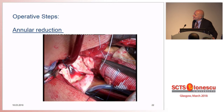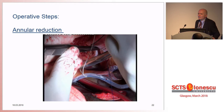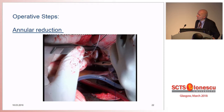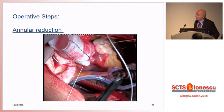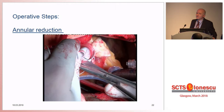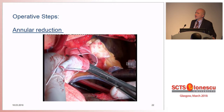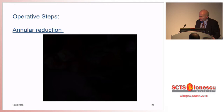This suture annuloplasty is shown here: a CV-0 PTFE suture fixed at the level of the nadirs of the three sinuses, then simply tied around a Hegar dilator. It is very inexpensive and not very time-consuming, yet it is very effective. For a 26mm graft I use a 25mm Hegar; for a 24mm graft I use a 23mm Hegar — very similar to the algorithm I use for choosing graft size.